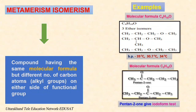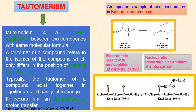The branching isomer, isopropyl methyl ether, has a lower boiling point than the linear chain isomer due to decreasing intermolecular forces of attraction. Two isomers are possible with the molecular formula C5H10O: 2-pentanone and 3-pentanone. 2-pentanone has a boiling point similar to that of 3-pentanone, but their chemical properties are different. 2-pentanone, being a methyl ketone, gives a positive iodoform test, but 3-pentanone does not. Next is tautomerism.